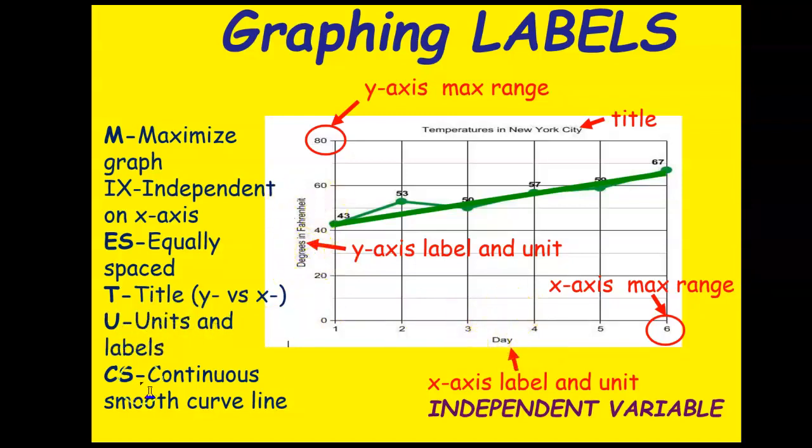And then the last one is CS, which stands for continuous smooth line, which is when our points are plotted, then we do our best fit line between those points.